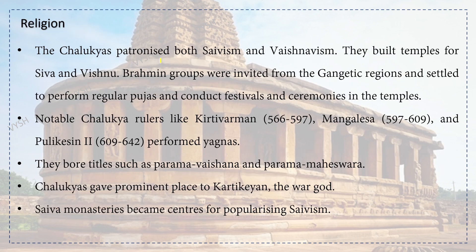Regarding religion: the Chalukyas patronized both Shaivism and Vaishnavism. They built temples for Shiva and Vishnu. Brahmin groups were invited from Gangetic regions and settled to perform regular pujas and conduct festivals in the temples. Notable Chalukyan rulers like Kirti Varman (566–597), Mangalesa (597–609) and Pulakeshin II (609–642) performed Yajnas. They bore titles such as Parama Vaishnava or Parama Maheshwara. Chalukyas gave a prominent place to Kartikeya, the war god, and Shaiva monasteries became centers for popularizing the Shaiva faith.